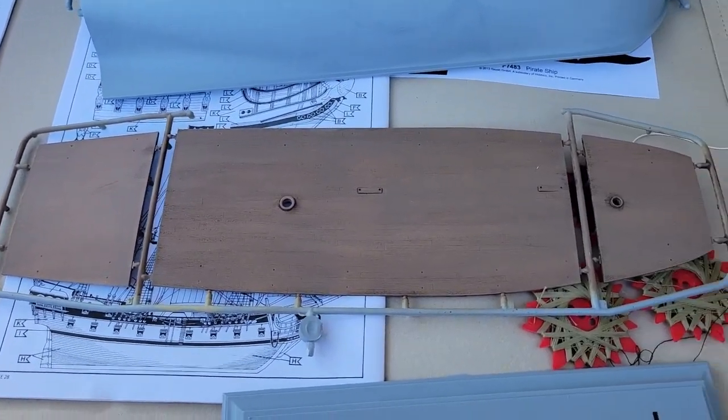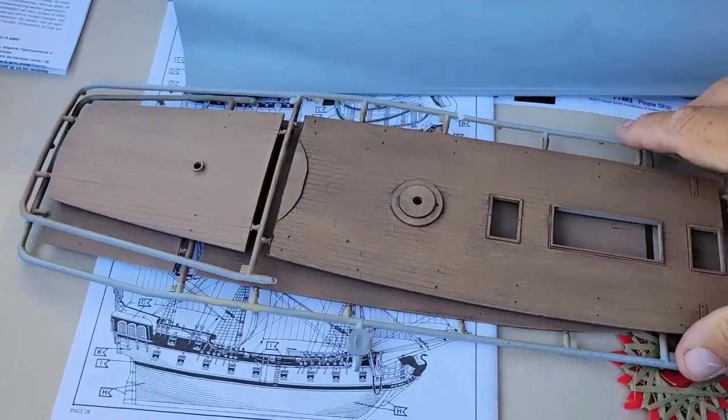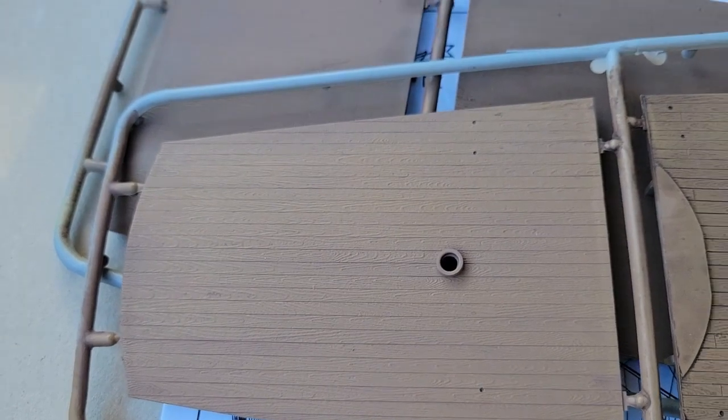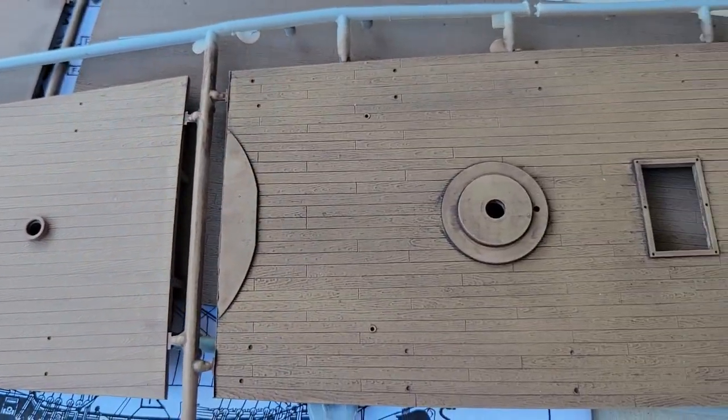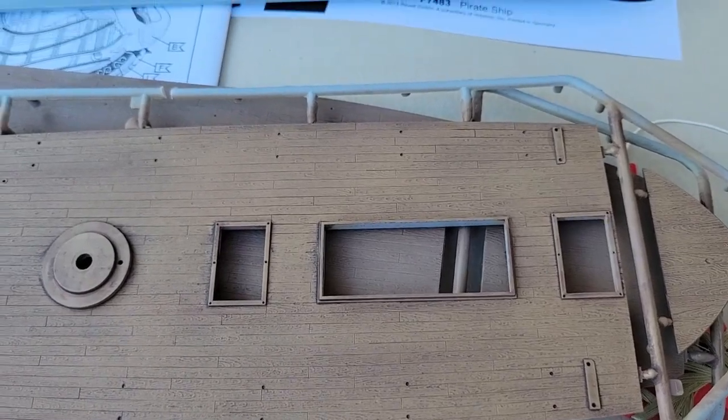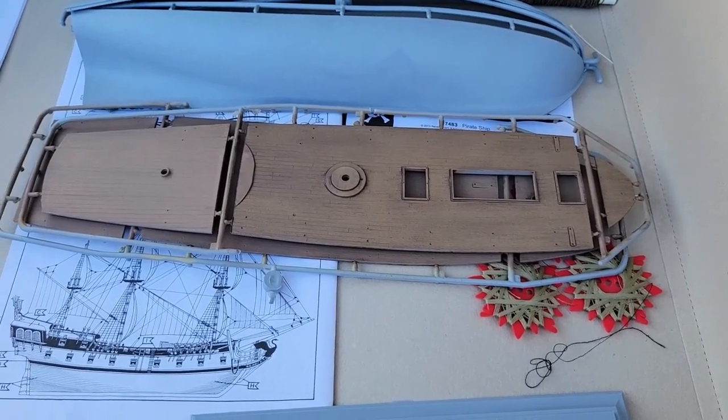But this is the one with the Mission Models paint. And you can see again, the detail is just amazing. And this is the one with the Tamiya paint. Let's look at the deck detail on here. If I dry brush that with what I've already done, I bet this would just really pop. Very well molded, very well done.